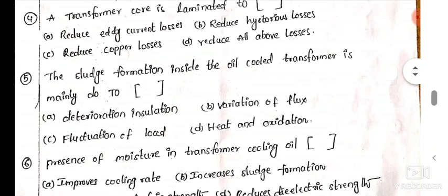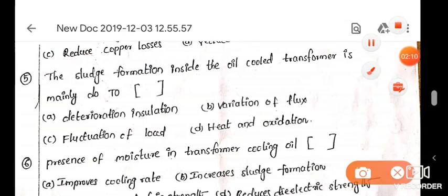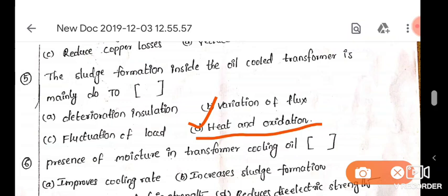Next: sludge formation inside the oil cooled transformer is mainly - this is the fifth question, D.